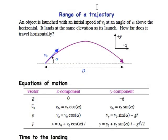An object is launched with an initial speed of v0 at an angle of alpha above the horizontal. It lands at the same elevation as its launch. How far does it travel horizontally? This is known as the range equation, a pretty classic result of ballistic physics.